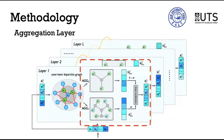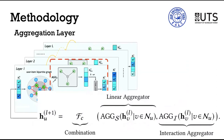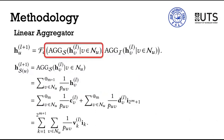We then introduce the aggregation layer. The aggregation layer consists of a linear aggregator and an interaction aggregator. The linear aggregator models a summary of the neighborhood. Since feature interaction is important for recommendation, we design an interaction aggregator to capture neighbor feature interactions. Finally, we use function x to combine the representations from these two aggregators. For the linear aggregator, it takes the summation of the neighbor's hypercomplex representations to describe the neighborhood information. We use the accumulation of the hypercomplex addition for the Cayley-Dixon algebra.